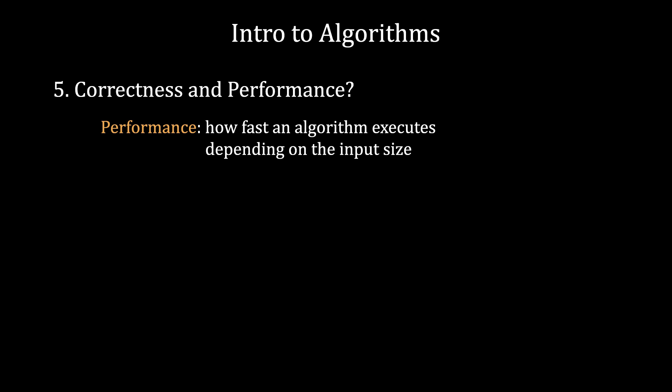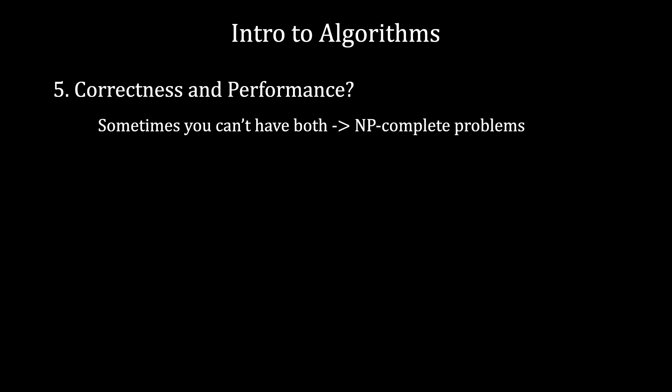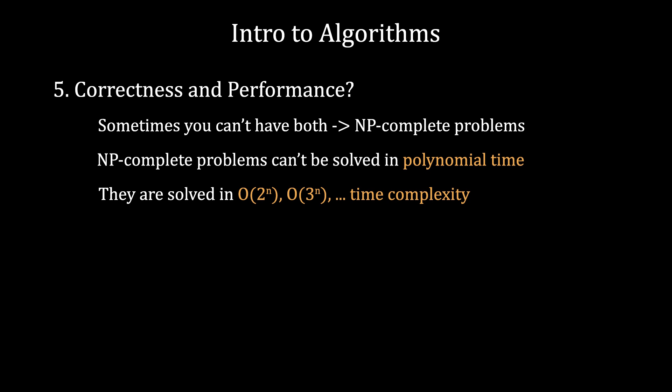The most common problem with correctness and performance is that often you can't have both. And this is especially the case of NP-complete problems. NP-complete problems can't be solved in polynomial time, so time complexities as big O of n squared or big O of n or big O of n log n. They are often solved using backtracking algorithms or brute force approaches in time complexities such as big O of 2 at power n, big O of 3 at power n, and so on and so forth.